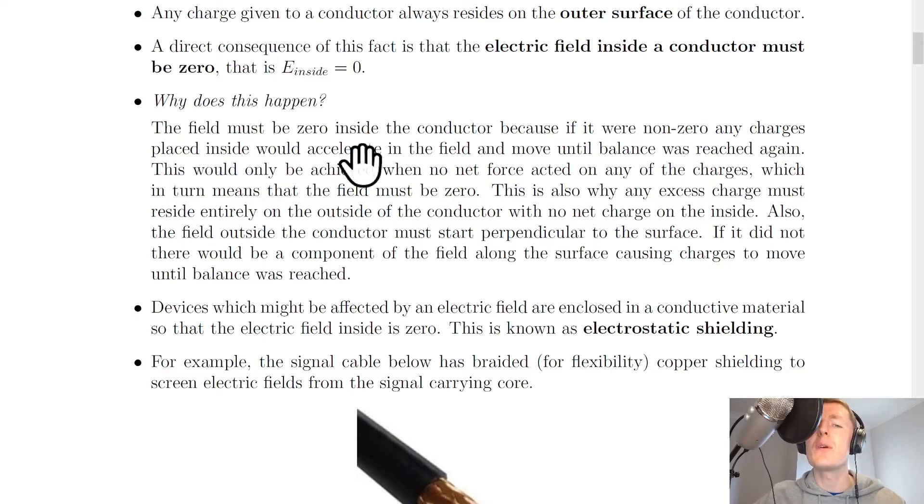Well, the field must be zero inside the conductor because if it were non-zero, any charges placed inside would accelerate in the field and move until balance was reached. This would only be achieved when no net force acted on any of the charges, which in turn means that the field must be zero.